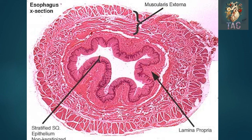Beneath the epithelium is the lamina propria, then muscularis mucosa, then the submucosa, and outer to submucosa is muscularis externa and then the adventitia. An important point for identification of this slide under the microscope is that you will first identify the stratified squamous non-keratinized epithelium. When you identify stratified squamous non-keratinized epithelium, you will think about different parts of the GI tract like oral cavity, lip, esophagus, and the last part of the anal canal.